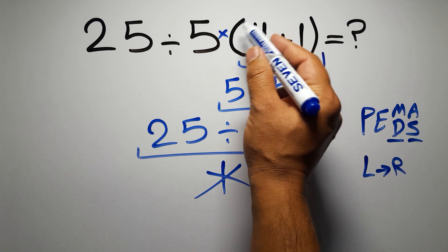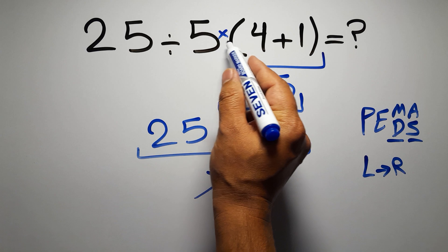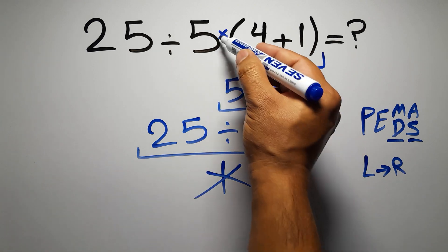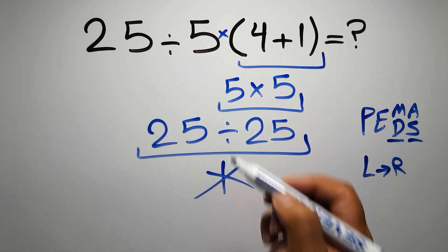So according to PEMDAS, first we have to do this parentheses, then this division, and finally this multiplication. If we do this multiplication before this division, it is wrong.